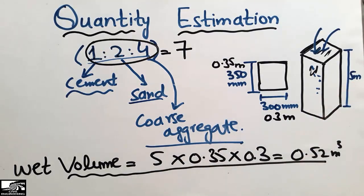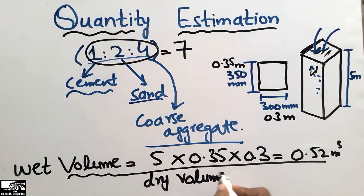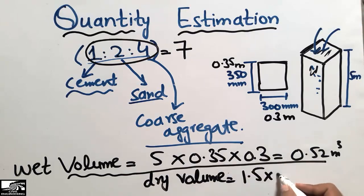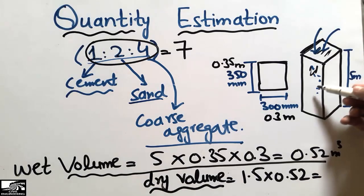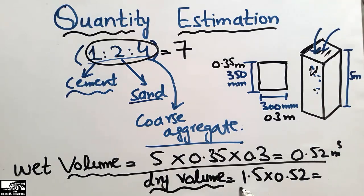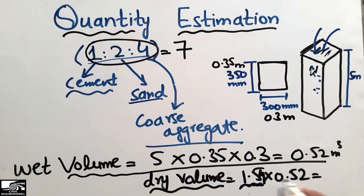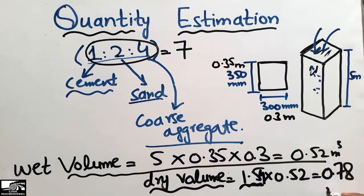We are always interested in finding the dry volume of the concrete. To find the dry volume, we multiply the wet volume by a factor of 1.54. I will upload a video explaining where this factor comes from — a link is in the description. Multiplying 1.54 by the wet volume gives us the dry volume of 0.78 cubic meters.